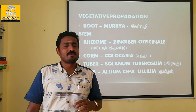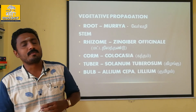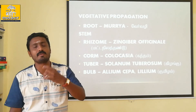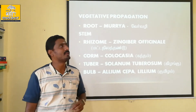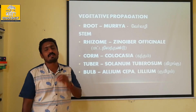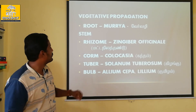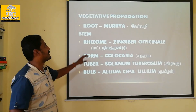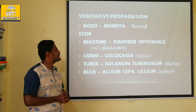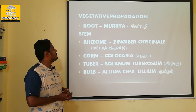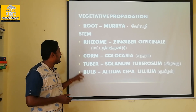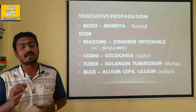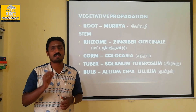Let's talk about some examples from the 11th standard. Examples include carrots and radishes as root-based structures. For stem-based structures, we have the rhizome, corm, tuber, and bulb — all of these are underground stem structures.